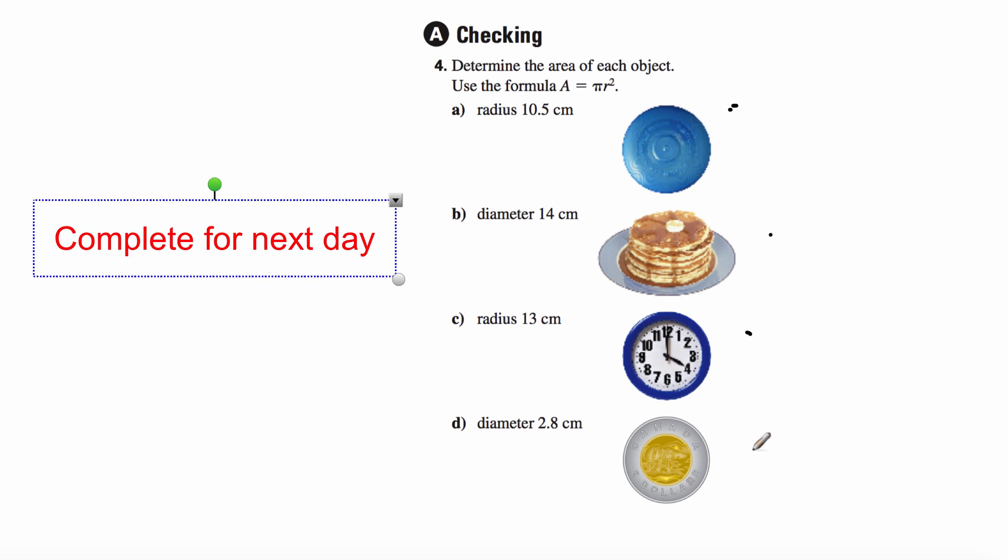Right here. One, two, three, and four. That is for you to complete. Determine the area of each object. Here is your formula. Okay. And this is right in the textbook. It's number four in the textbook. Checking. Number four. Anyone else be checking? I'll be checking this. So, come prepared with this, including your notes, and have this ready to go.